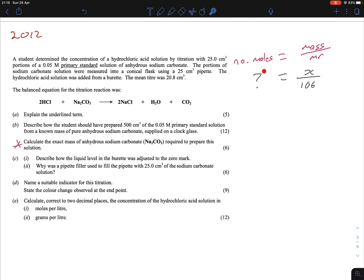So we actually need to figure out the number of moles. If we're reading this here, describe how a student could have prepared 500 cm³ of 0.05 molar primary standard solution, that's the sodium carbonate there. So we actually know two pieces of information: we know there is 500 cm³, we know the volume, and we know the molarity.